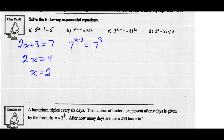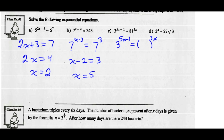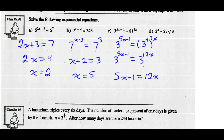Now we've got powers with the same base. I can equate the exponents: x minus 2 equals 3. That's a very simple linear equation — add 2 to both sides — and x is 5. Part C: the left side has a power of base 3. I can rewrite 81 as a power of base 3: 81 equals 3 to the 4th. So instead of 81 to the 3x, I've got 3 to the 4th, all to the 3x. Simplifying the right side gives 3 to the 12x. I've now written both sides with the same base, so I equate the exponents: 5x minus 1 should equal 12x. Subtract 5x from both sides and divide by 7, giving x equals negative 1/7.